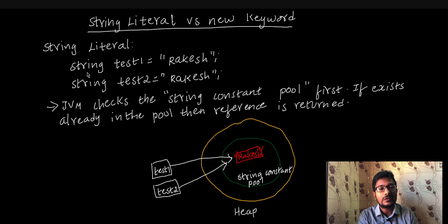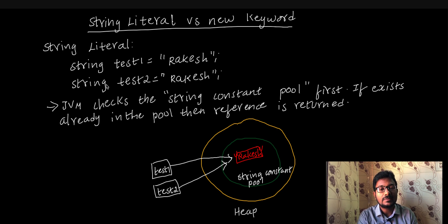The syntax is: string, and the variable name test1 equals the data in double quotes. That's the string. test2 equals double quotes data. In this case, the two data values are the same.